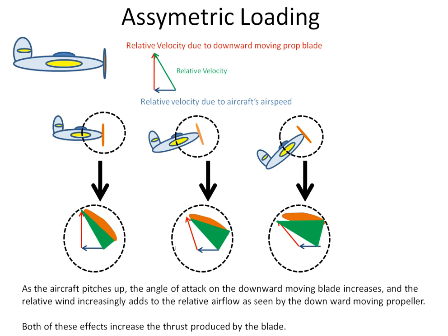As the aircraft pitches up, the angle of attack on the downward-moving blade increases and the relative wind increasingly adds to the relative airflow as seen by the downward-moving propeller. Both of these effects increase the thrust produced by that blade.